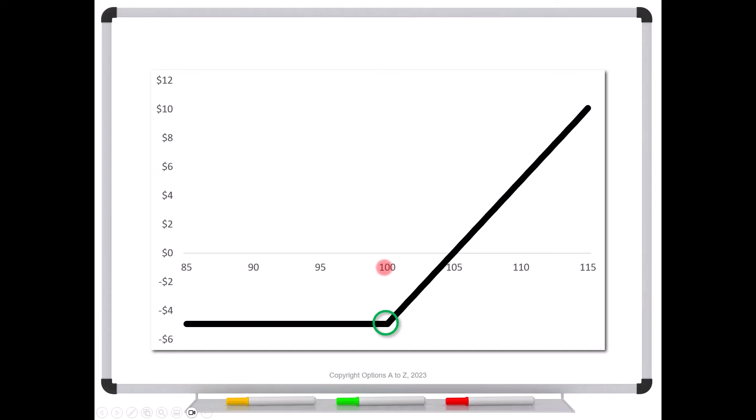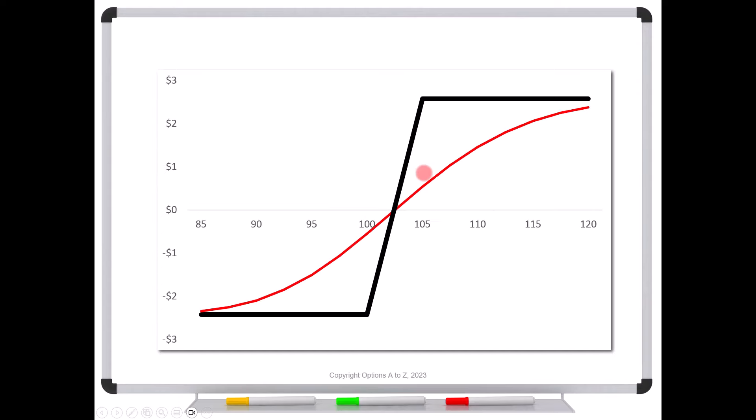All right, so now what about for multi-legged positions? Let's say for a vertical spread. If you have the 100-105 vertical spread, this is your risk graph at expiration. The red line is the current curve. Now let's say this is the long 100-105 vertical. So I own the 100 call and I'm short the 105. There's our two bends.